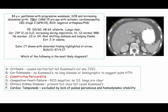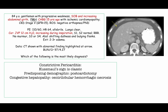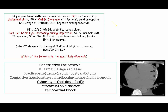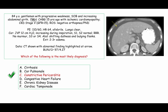This brings us to constrictive pericarditis. This patient had Kussmaul's sign, which is classic. He had a predisposing cause with a remote history of coronary bypass surgery. His constrictive pericarditis presented with a hepatic manifestation — congestive hepatopathy, pathologically described by central lobular hemorrhagic necrosis, clinically called cardiac cirrhosis. Other signs classically associated with constrictive pericarditis include pericardial calcification and pericardial knock, neither of which were present in this patient. The question writers were looking for the most likely diagnosis — constrictive pericarditis best fits the entire presentation.